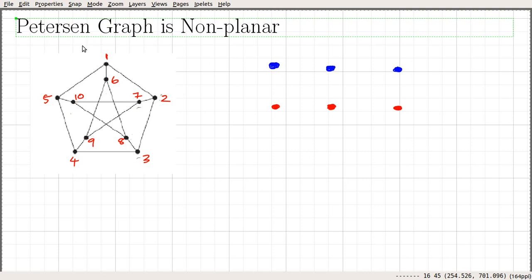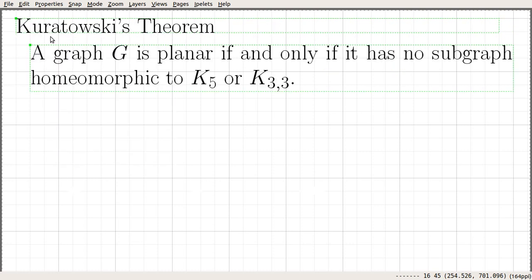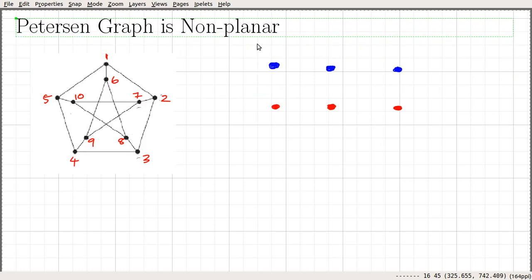In this video we are going to prove that the Petersen graph is non-planar. We are going to use Kuratowski's theorem, which says a graph G is planar if and only if it has no subgraph homeomorphic to K5 or K3,3. So if a particular graph has a subgraph that is homeomorphic to either K5 or K3,3, then definitely the graph is not going to be a planar graph.